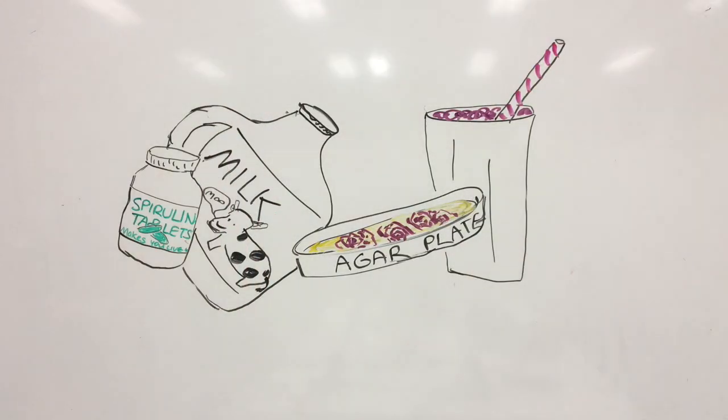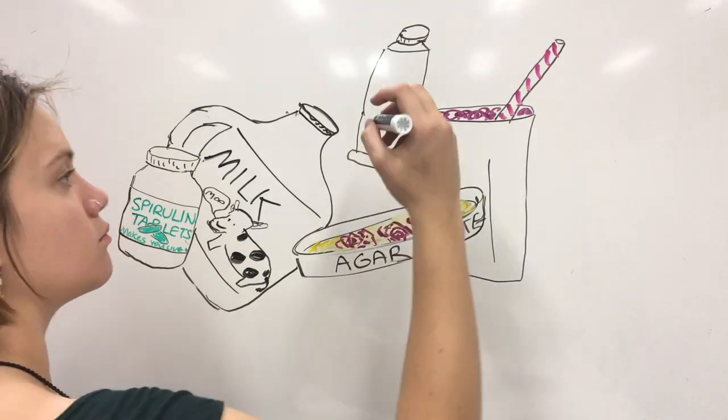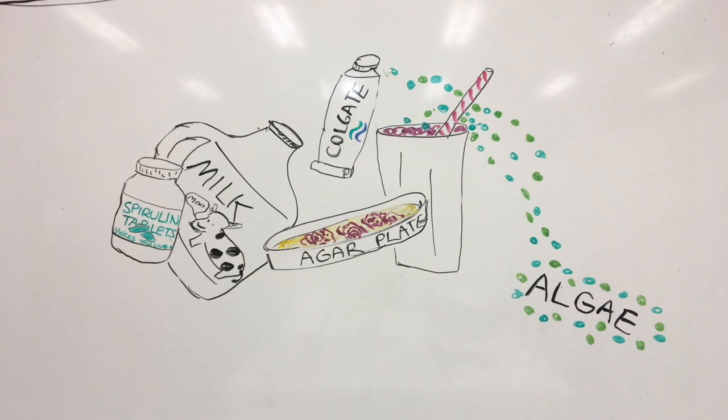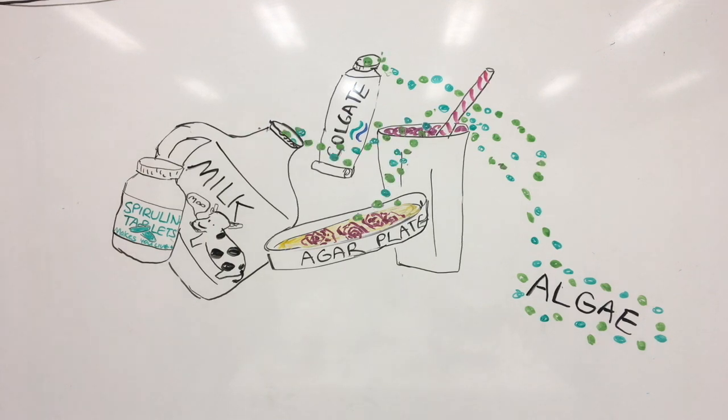It is also found in dairy products as a thickener, in foods such as shakes and mayonnaise as a stabilizer and emulsifier, wrapped around sushi, as a gelatin alternative to solidify food, and even in your toothpaste.